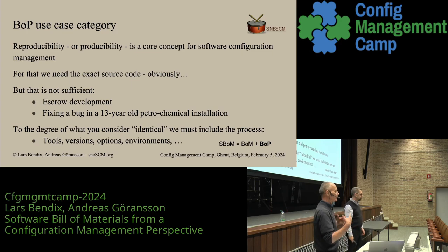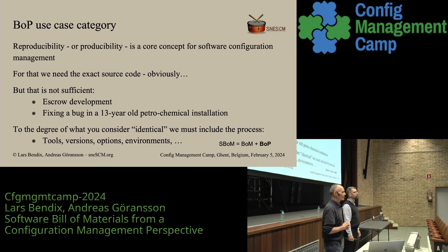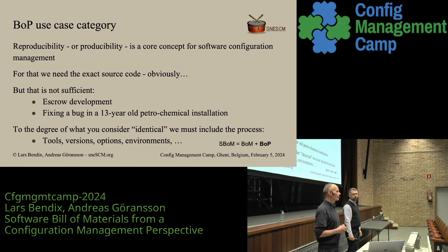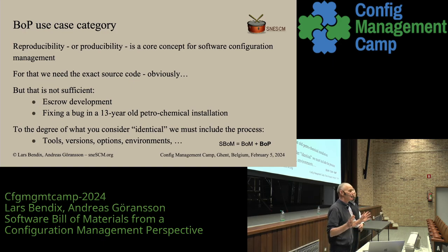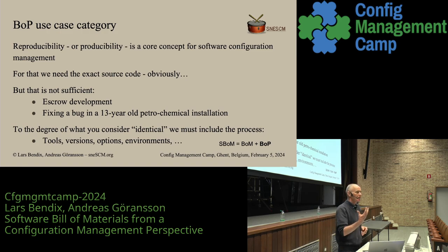When we add the process perspective to the materials, we're talking about being able to reproduce or produce binaries that we have. Usually we'd like to recreate them exactly identical to something we had in the past. Having the source code, having the version of the source code, is not enough. People who have done escrow development — where you deposit the source code so your customer believes they can pull it out if you go bankrupt and continue to develop — will know there is a lot more to it than the source code, including the tools and all the environment setup. If we should be able to reproduce software, we also need to capture this, otherwise we're left with just a list of ingredients.